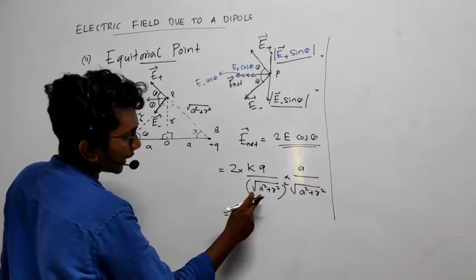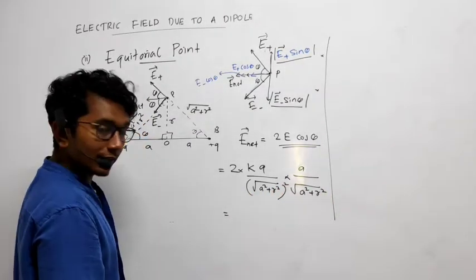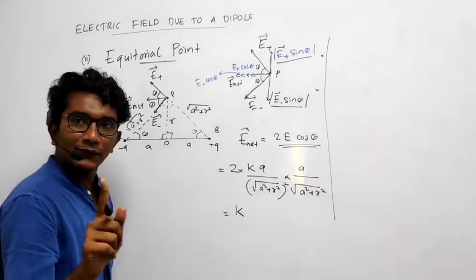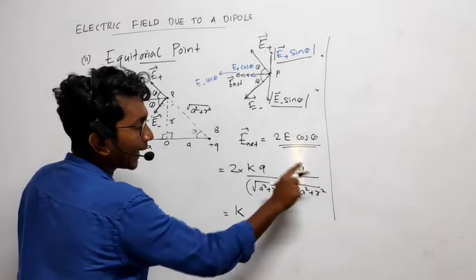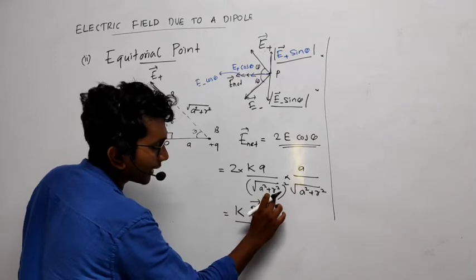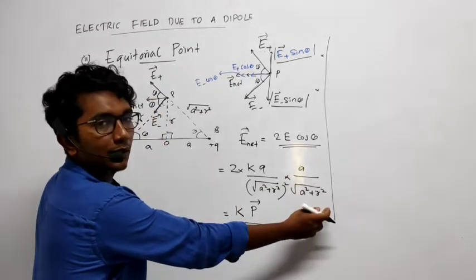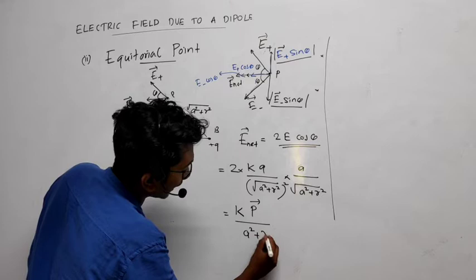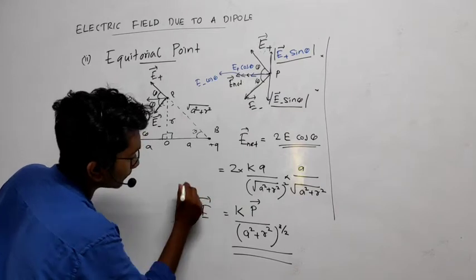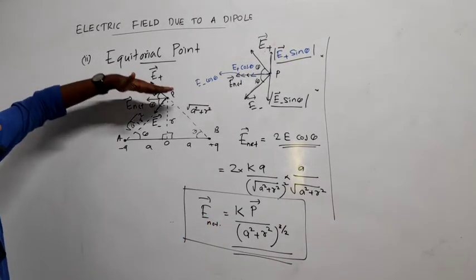So E_net = 2 × E × cos θ = 2 × [KQ / (A² + R²)] × [A / √(A² + R²)]. Taking K outside and combining, we get E_net = KQ × 2A / (A² + R²)^(3/2). Since Q × 2A = P (the dipole moment), we can write: E_net = KP / (A² + R²)^(3/2). The direction of E_net is in this direction, and the angle theta can be determined.